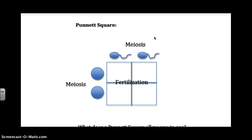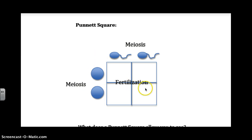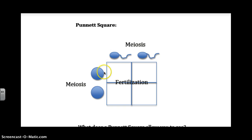Here's a Punnett square, and on the top you're used to seeing the letters for a dominant or recessive allele, and then on the side you would also see the letters for a dominant and recessive allele. But what this diagram is showing you is that meiosis is what creates sperm, and meiosis is what creates eggs in females. The Punnett square shows you the result of fertilization — when the egg and the sperm are fertilized, the offspring will have a certain allele combination according to what it inherits from its father's sperm and from its mother's egg.